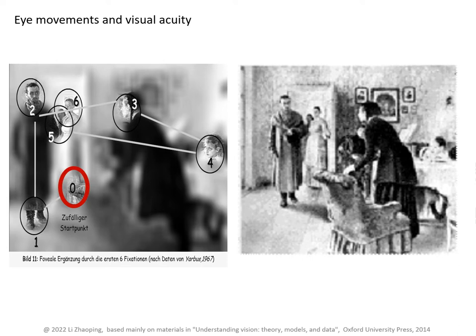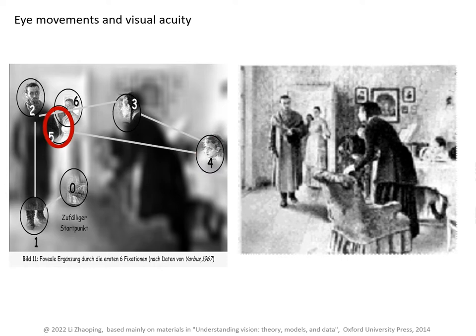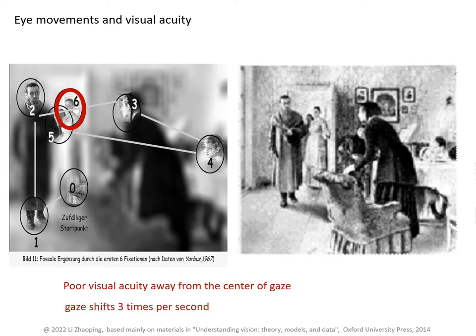For example, the starting gaze position is here, then move to the shoes, then to the face, then to this face, then to the third face, then to this elbow, and to a face in the background. Note that we can only see clearly at or near the center of gaze, and we move our gaze positions about three times a second. We are typically not aware how frequently we move our eyes.